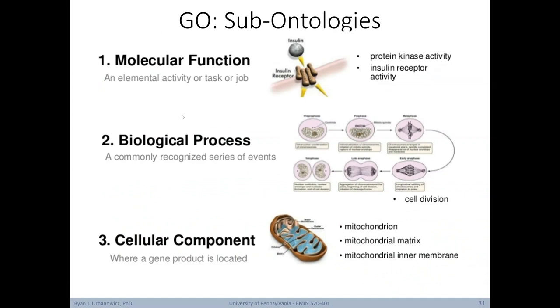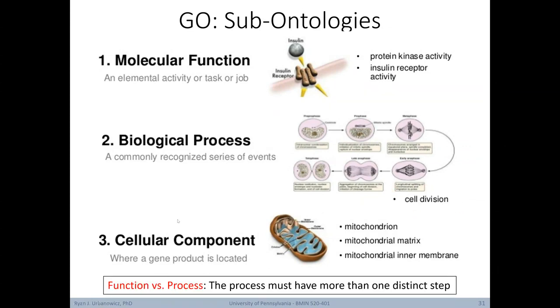Let's take a closer look at these three sub-ontologies. The first is molecular function, which include terms that are elemental activities or tasks or jobs. These can be things like protein kinase activity or insulin receptor activity. Next, we have biological process. This group includes terms that describe a commonly recognized series of events, for example cell division. Note here the difference between function and process, where a process has to have more than one distinct step. Lastly, we have cellular component. This is basically a term that describes where a gene product is located, such as the mitochondrion, mitochondrial matrix, and mitochondrial inner membrane. As mentioned, the Gene Ontology is arranged as a set of three hierarchies. Here we see an illustration of terms organized within one of those sub-hierarchies. And notice again that they're arranged from less specific or more general to more specific or less general.